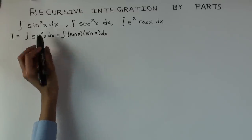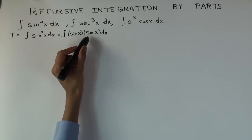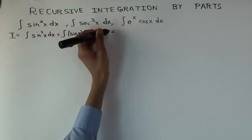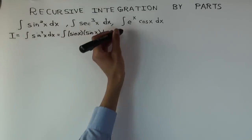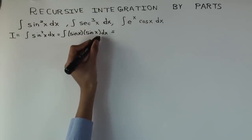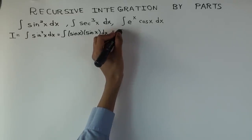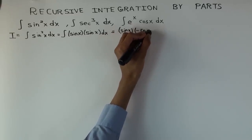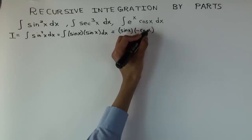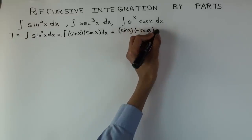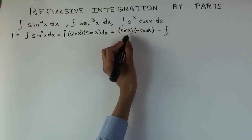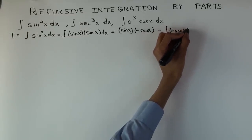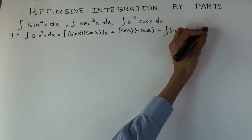Let's do sin²x — that's the first of three examples. I write it as sin(x) times sin(x). Which of these should I take as the part to integrate and which to differentiate? It doesn't matter because they're the same thing, so I'll take sin(x) as the part to integrate. That gives sin(x) times negative cos(x) minus the integral of — the derivative of sin is cos(x) — times negative cos(x) dx.